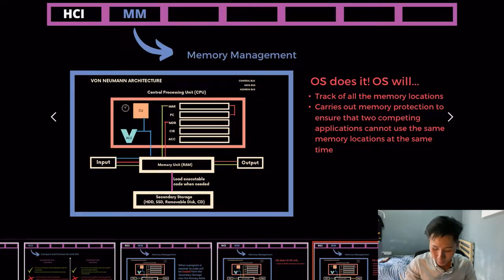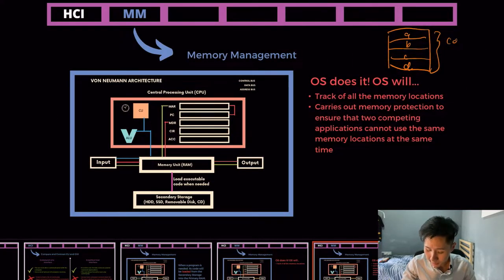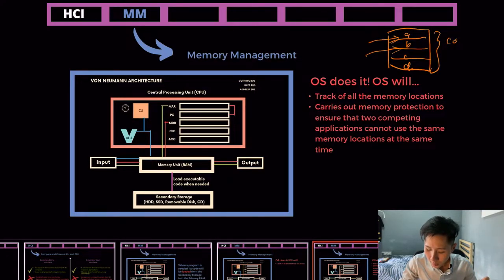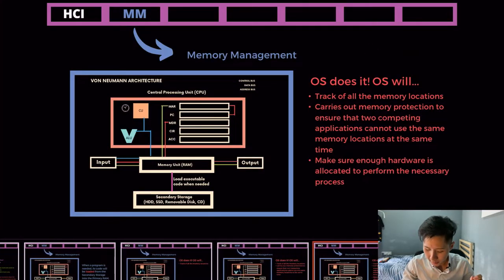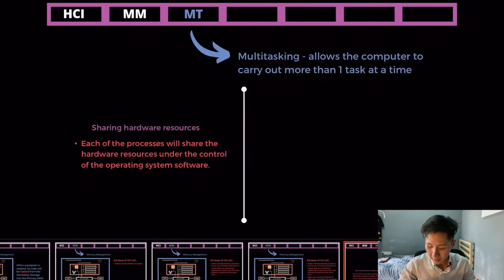RAM looks like a bunch of different rectangles where each box stores different data — the code being run at any given time. What the OS does is ensure that no two programs are loaded to the same memory location; otherwise the program will crash. It also makes sure enough hardware is allocated to perform the necessary processes — for instance, how much RAM should be allocated to a program for it to run smoothly without lagging.